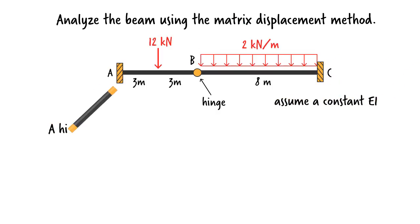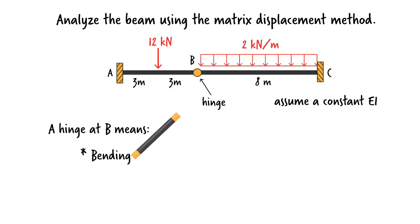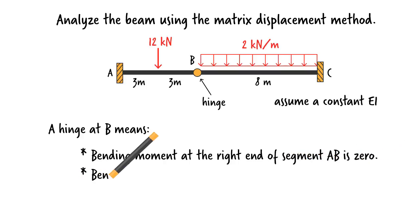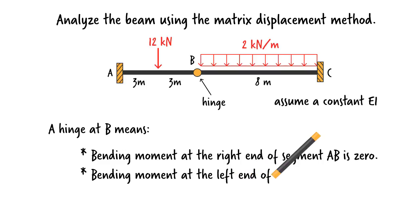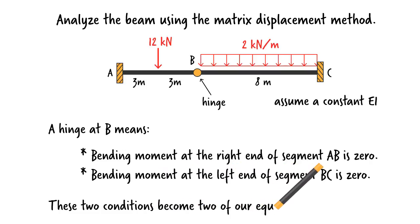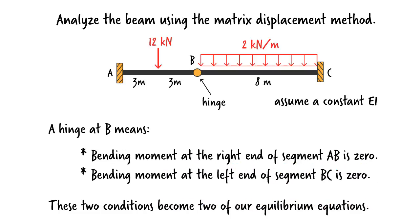The hinge imposes two important constraints. The bending moment at the immediate left side and the immediate right side of the hinge must be zero. Put it differently, bending moment at the right end of segment AB is zero and bending moment at the left end of segment BC is zero. We are going to use these constraints as our equilibrium equations later on.